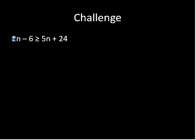And now the challenge question, where we have the variable on both sides of the inequality. To solve this, it takes one extra step. I'm going to subtract 5n from both sides of this inequality. 5n minus 5n cancels on the right side, and I'm left with all my n values on the left side. 2n take away 5n gives me negative 3n. Everything else remains exactly the way it was.